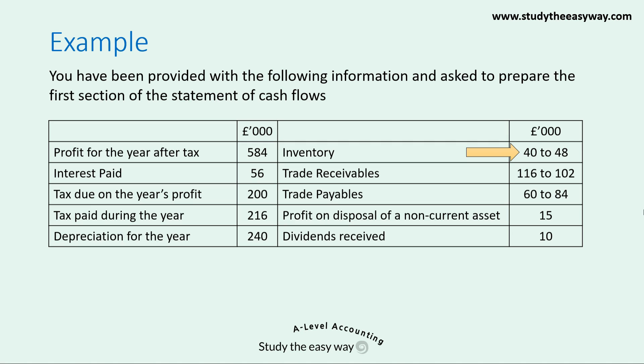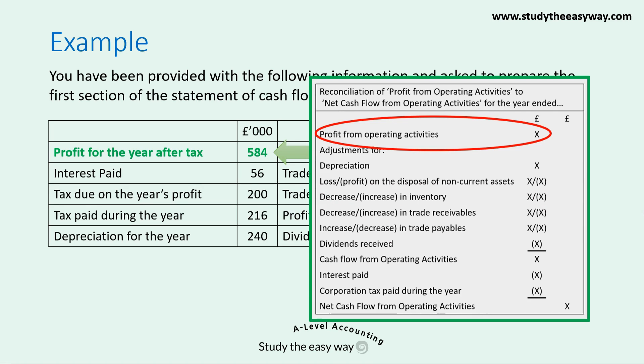For inventory, trade receivables and trade payables, the figures are shown for both the start and end of the financial year. For example, inventory at the start of the financial year was £40,000, changing to £48,000 at the end, giving an increase in inventory of £8,000. Notice that the profit figure given is profit for the year after tax. Remember that the statement requires us to start with profit from operating activities. Because that's not in the information provided, we'll have to calculate it. It's important to notice which profit figure you've been given, as you may need to do a calculation to start your statement.